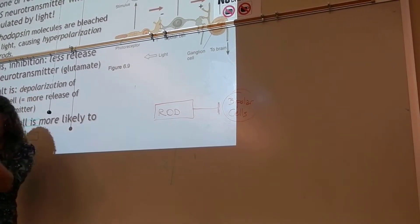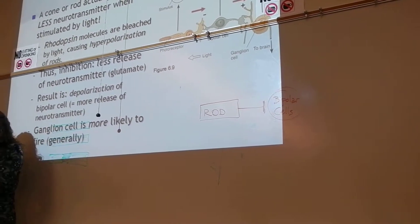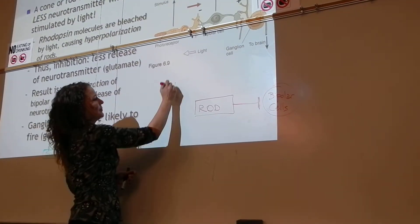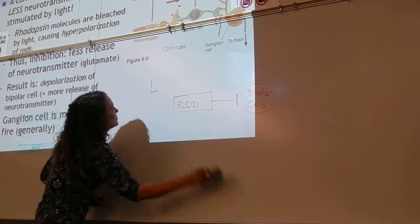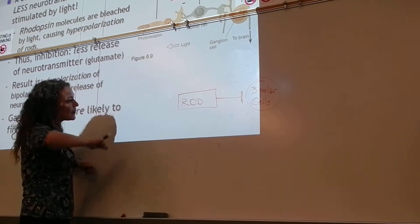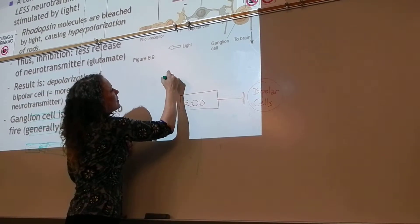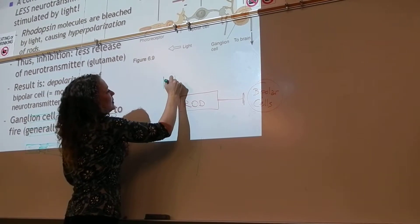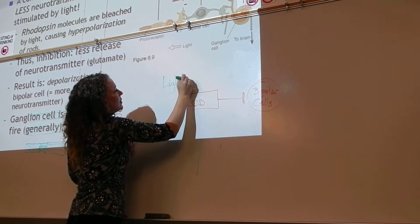At baseline, the rod has its little firing rate. When it catches light, that catches light, light equals less firing.